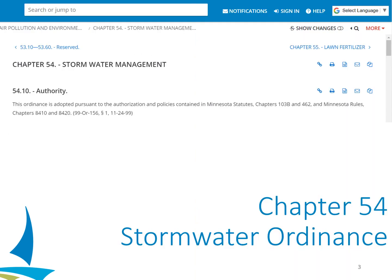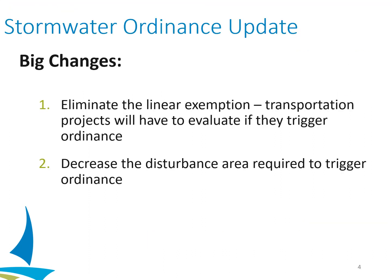I'll start off with the updates to the Chapter 54 Stormwater Ordinance. The big changes we see in the ordinance are that we are eliminating the linear exemption that has historically been on projects in the City. This means transportation projects will now have to evaluate whether or not they trigger the ordinance and are not immediately exempt.